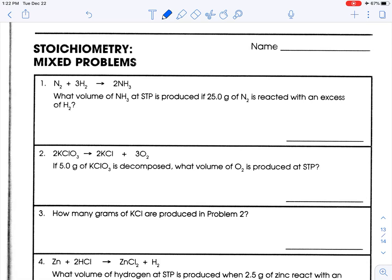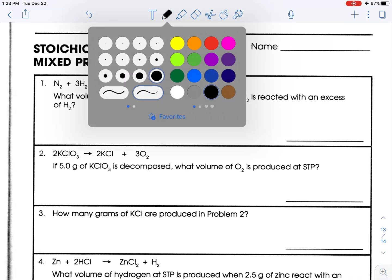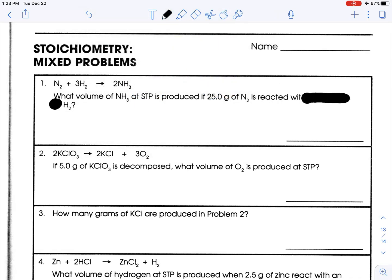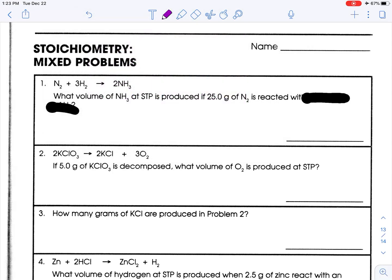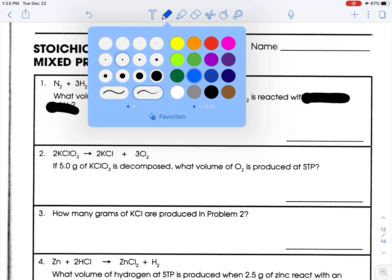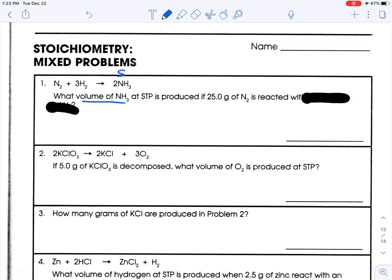All right, so what volume of NH3 at STP is produced if 25 grams of N2 is reacted with an excess of H2? Let me just say again, that this whole excess business, you're not going to need that for right now. So let's come up with a game plan. We're looking for volume, so that is our seek. And we know 25 grams of N2.